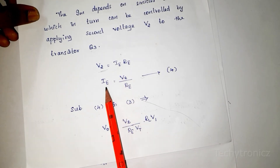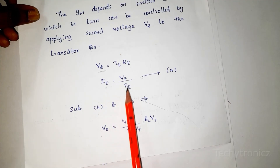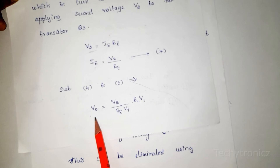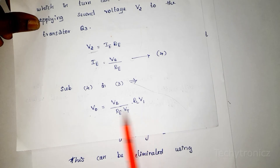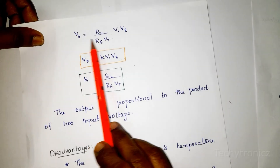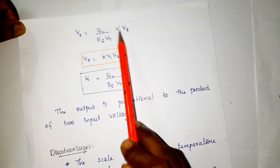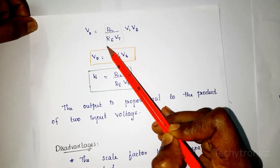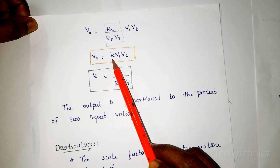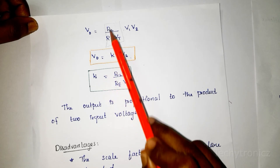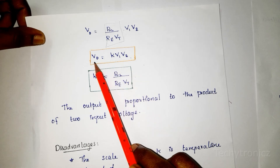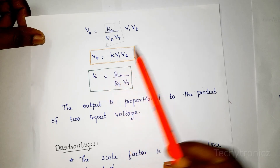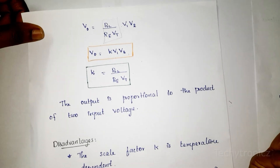From this equation, finding the value of IE: IE equals V2 divided by RE. Substituting and rearranging gives V0 equals (RL / RE·Vt) times V1 times V2. This scalar factor is the constant of proportionality k, so V0 equals k times V1 times V2, where k equals RL divided by (RE times Vt). The output voltage is the product of two input voltages — confirming this is an analog multiplier.